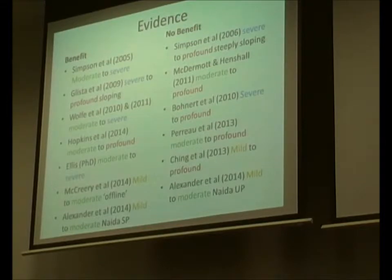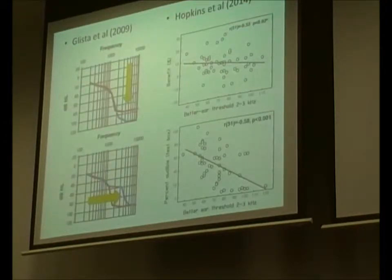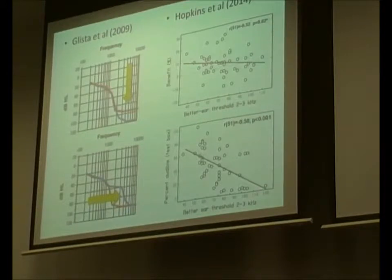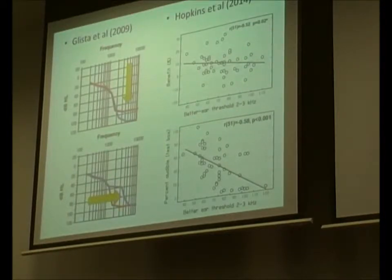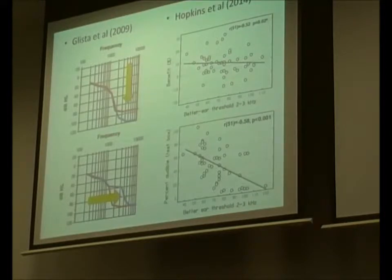There are only two studies that have looked within their results at whether there's a relationship between hearing loss and benefit. The Glyster study found that as average high-frequency thresholds increased — going from the red line to the blue line — benefit on their outcome measure increased. As the edge drop-off frequency increases, people tended to get more benefit in their study.